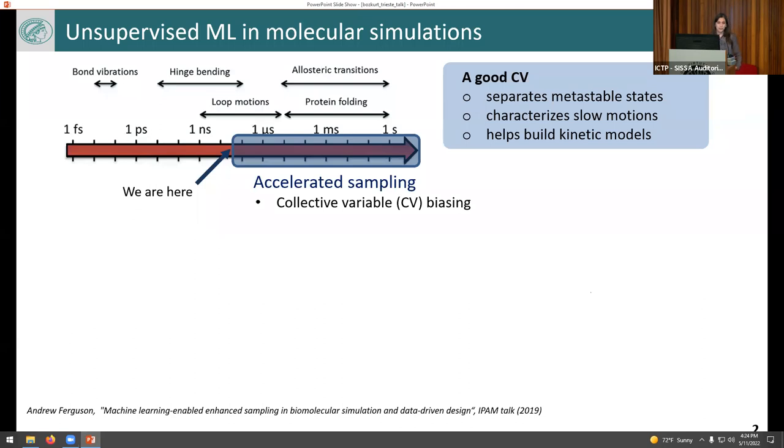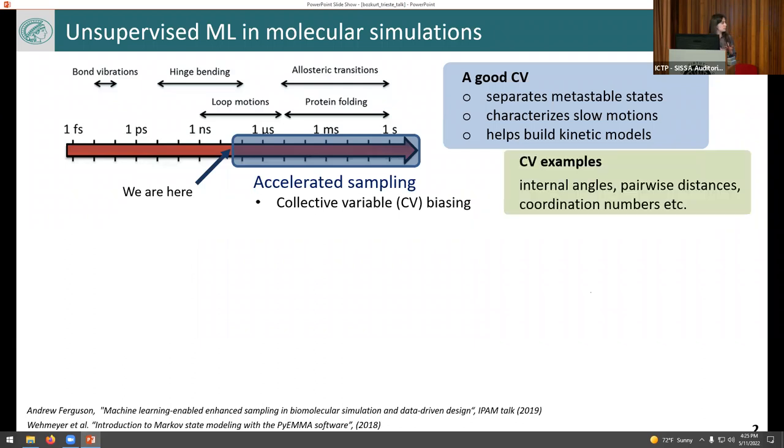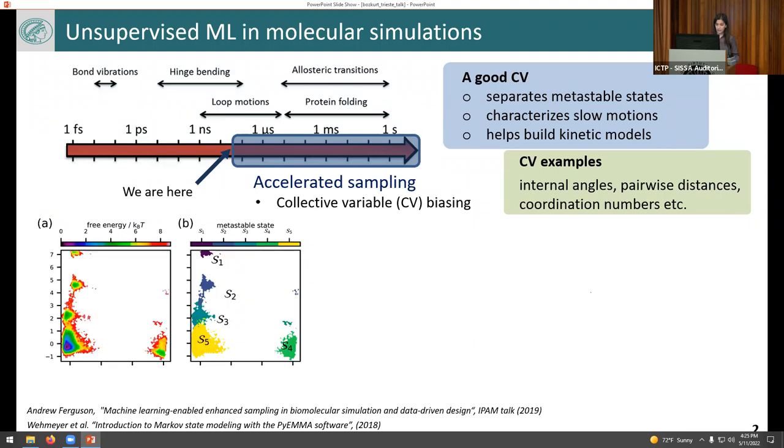So the idea is picking some direction and applying potential along this direction to accelerate the sampling. But this requires good selection of CVs beforehand, and what's considered as a good CV is that which allows crossing over the free energy barriers and also separates metastable states and therefore characterizes the slow motions and helps build kinetic models. The common choices are some internal angles and coordination numbers, also non-generic, highly system-dependent and highly complex descriptions of the system.